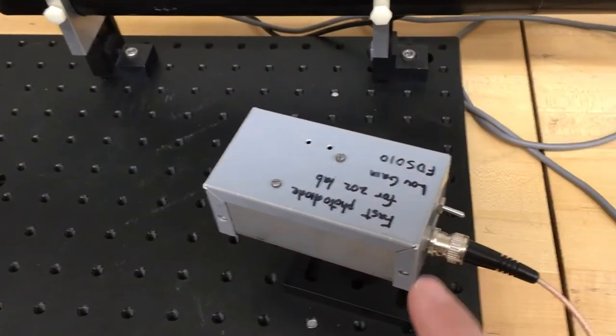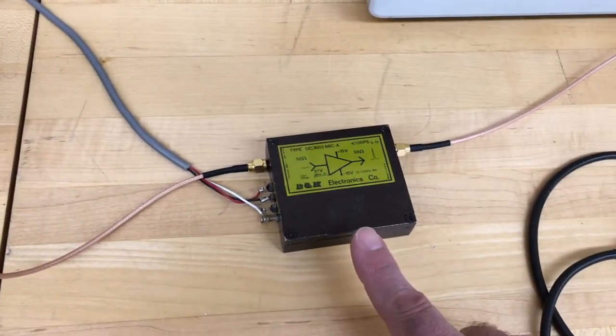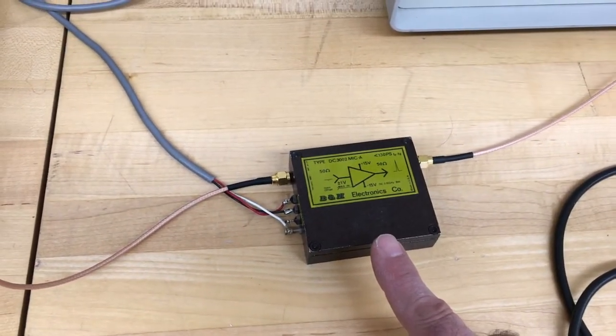Here's what we're going to do. We take the signal out of the photodiode over here, and first run it through an amplifier, because it's not a very big signal.